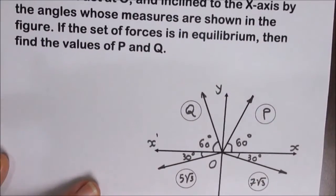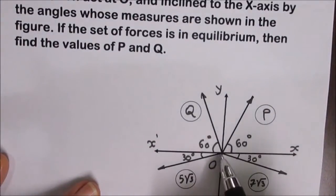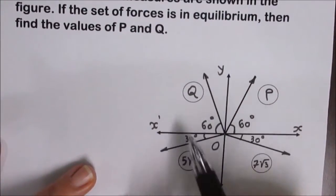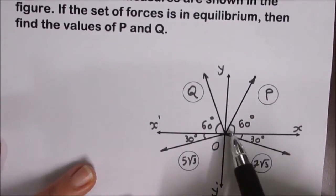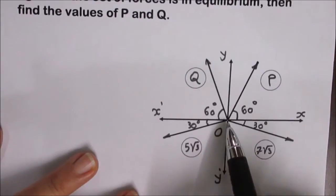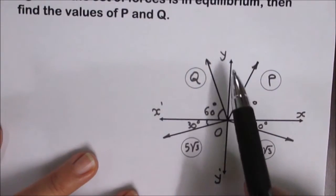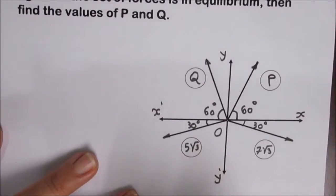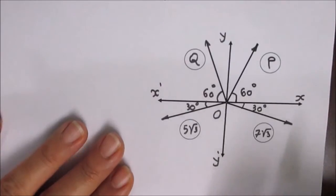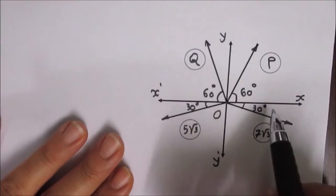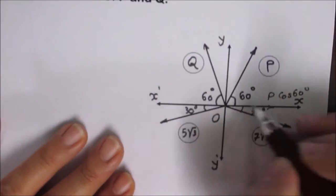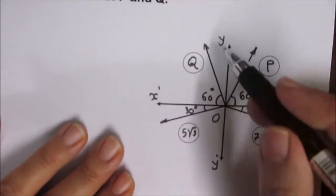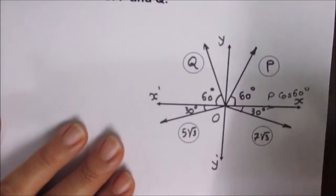Here we have a set of coplanar forces meeting at a point and they are in equilibrium. Then the algebraic sum of the components of the forces in the direction of x equals 0, and the algebraic sum of the components of the forces in the direction of y equals 0. The simplest way is to resolve each force on the diagram: the component in the x direction takes the cosine and the component in the y direction takes the sine.